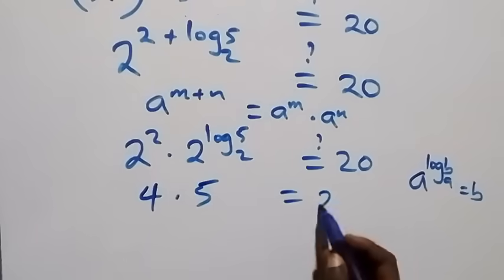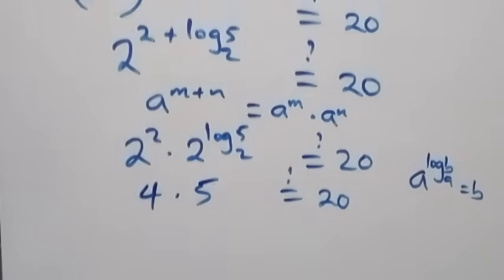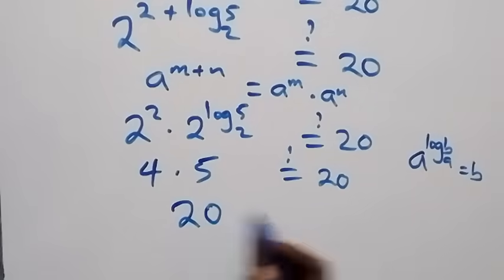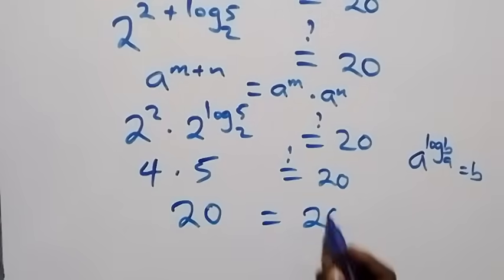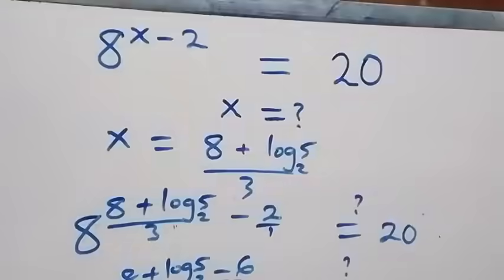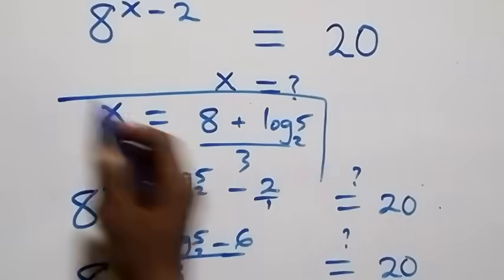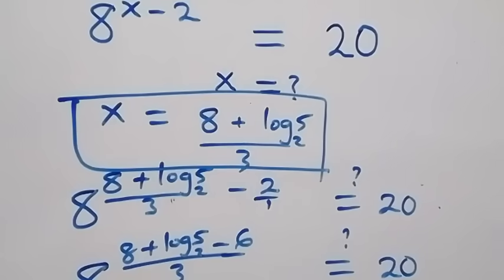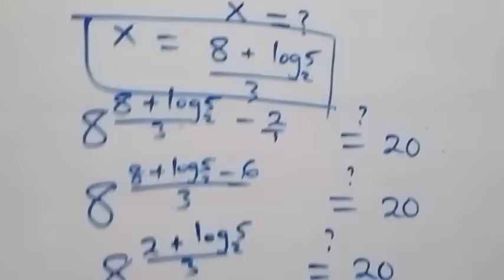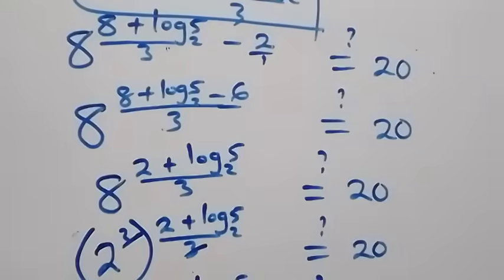4 times 5 is 20, which equals 20 on this side. Left answer equals the right answer. Hence we conclude that x equals (8 plus log₂5) / 3 satisfies the given problem. Thank you for watching — don't forget to subscribe for more videos, turn on the notification bell, share this video, give it a thumbs up, put your comments, see you next class, bye for now.